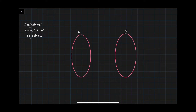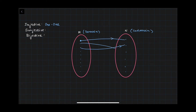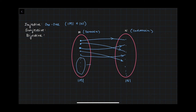An injective function means a one-to-one function. So if you have two sets M and N, where M is the domain and N is the co-domain, a one-to-one function means every point in M has to have a link to a point in N. The number of elements, denoted as |M| and |N|, requires |M| ≤ |N| for a one-to-one function, because all points in M must be mapped — though some points in N may be left out.